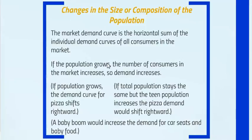Changes in the size or composition of the population: the market demand curve is the horizontal sum of all individual demand curves. If the population grows, the number of consumers increases and demand increases, shifting the demand curve for pizza rightward. If the overall population stays the same but the teen population increases, pizza demand also shifts rightward. A baby boom would increase demand for car seats and baby food during that period.